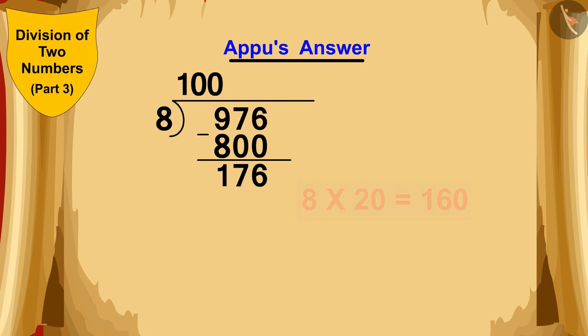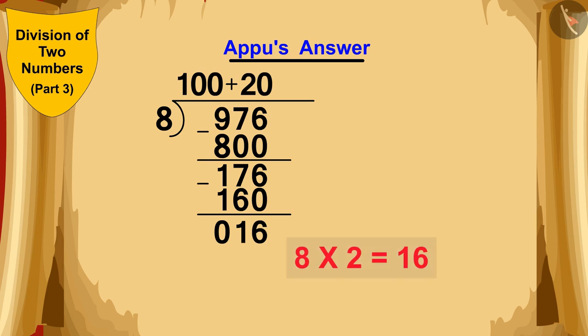Now, Appu saw that 8 times 20 is 160. So he added 20 above. And at the bottom, he deducted 160 from 176 and wrote 16 at the bottom. Now, finally, Appu saw that 8 times 2 is 16. And he quickly wrote down 2 at the top.